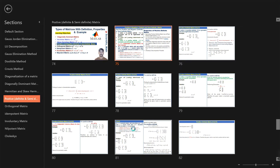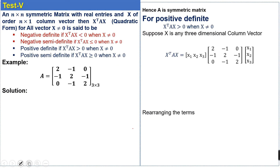For our fifth test example, we have an n×n symmetric matrix with real entries and x an n×1 column vector. The quadratic form is negative definite if less than zero, negative semi-definite if less than or equal to zero, positive definite if greater than zero, and positive semi-definite if greater than or equal to zero — meaning the product can equal zero. The given matrix is of order 3×3.